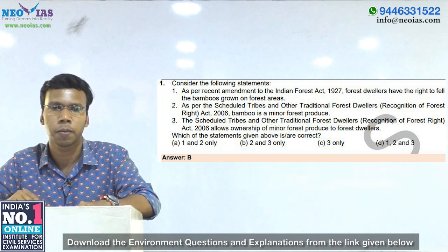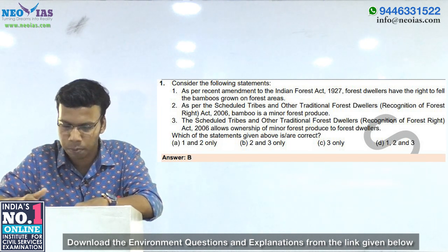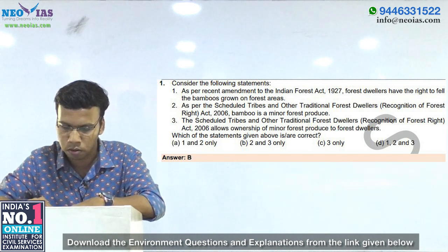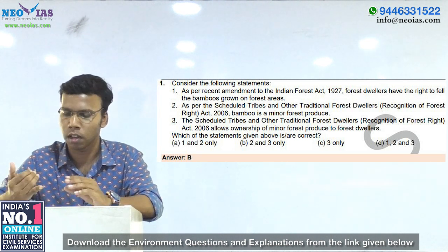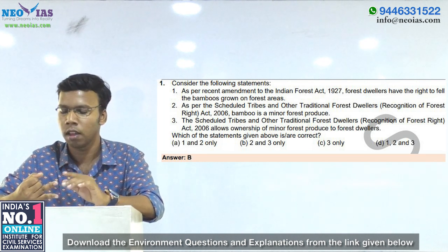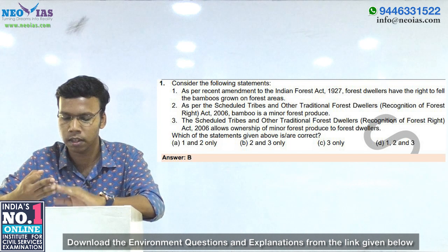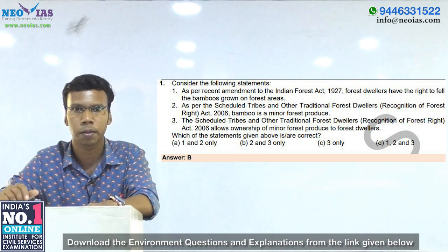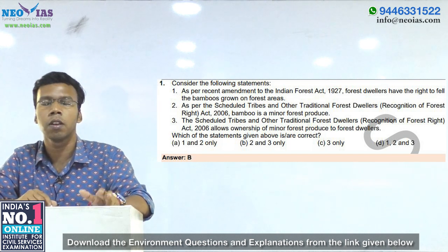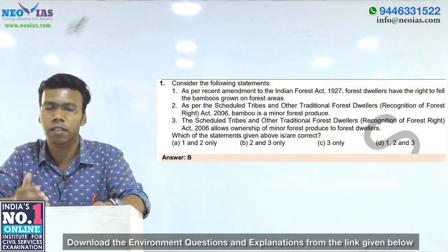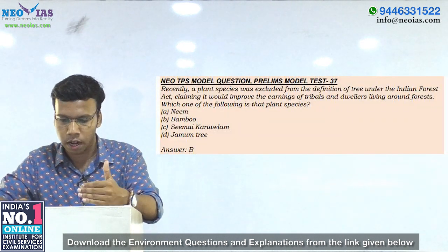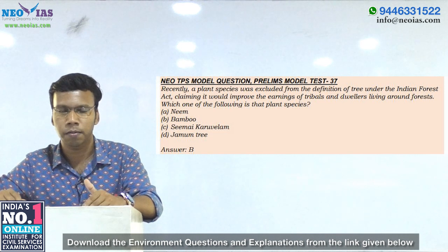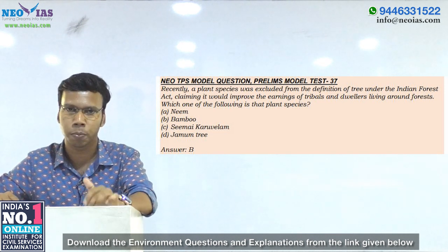So we got the answer as B — statements 2 and 3. The third statement says the Scheduled Tribes and Other Traditional Forest Dwellers Recognition of Forest Rights Act allows ownership of minor forest produce to forest dwellers. Individual forest rights, community forest rights, and community forest resource rights empower the people and the Gram Sabha to manage and use this forest and forest produce. This was a current affair — removal of bamboo from the definition of tree. Based on that, this question was asked, and we also made a model question on this topic.